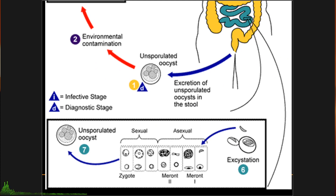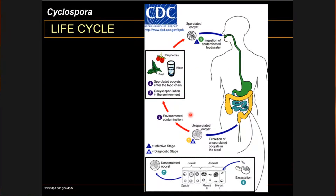Trophozoites subsequently undergo both sexual and asexual reproduction, similar to what happens in Cryptosporidium. Zygotes are formed through sexual reproduction, producing unsporulated oocysts which are shed in the feces. The end product of reproduction is an unsporulated oocyst. This is in contrast to Cryptosporidium, which produces sporulated oocysts.